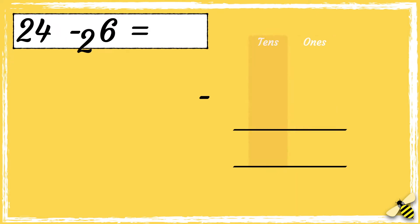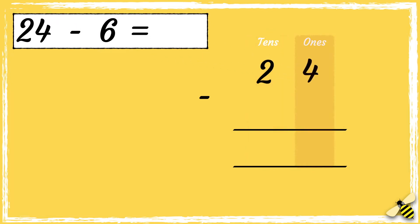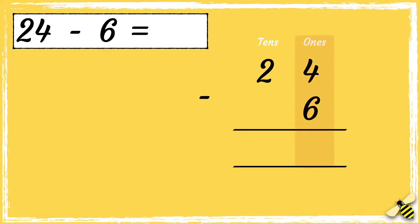The number 24 has two tens and four ones. The number 6 has six ones. Now our column subtraction is set up, we can subtract the digits in each column. We start from the right hand side, so we're starting with the ones. We can't subtract six from four, so we need to borrow a ten from the tens column.